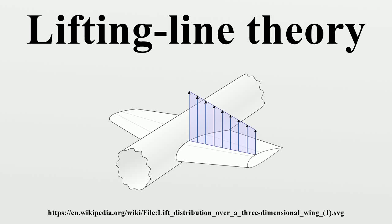The Prandtl Lifting Line Theory is a mathematical model that predicts lift distribution over a three-dimensional wing based on its geometry. It is also known as the Lanchester-Prandtl Wing Theory. The theory was expressed independently by Frederick W. Lanchester in 1907, and by Ludwig Prandtl in 1918-1919 after working with Albert Betz and Max Munk.